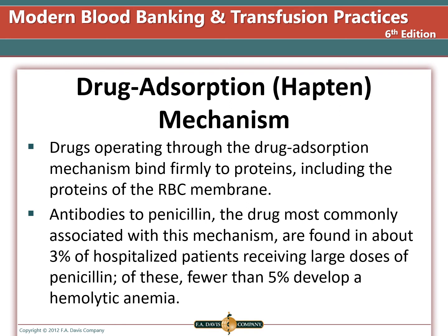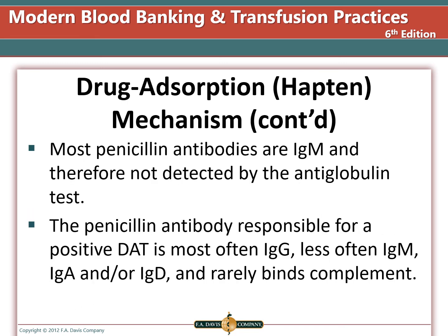In the hapten mechanism, the drug binds to the red blood cell membrane and an antibody to the drug attaches directly to it. Since the drug is on the surface of the red cell, the cell is coated with antibodies, which flags it for removal. Antibodies to penicillin are most commonly associated with this mechanism, found in 3% of hospitalized patients receiving large doses of penicillin, but less than 5% of those will develop hemolytic anemia. Most penicillin antibodies are IgM and will not be detected by the anti-human globulin test, so the DAT would be negative. When the hapten mechanism does cause a positive DAT, it is most often IgG and rarely binds complement, resulting in extravascular rather than intravascular red cell destruction.